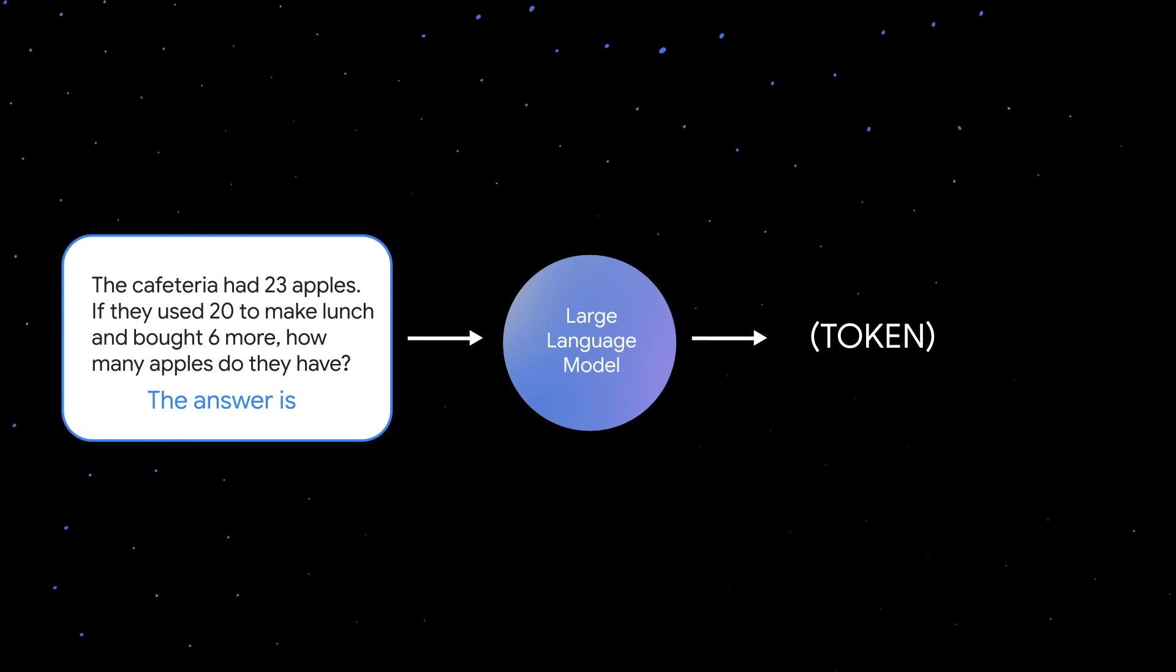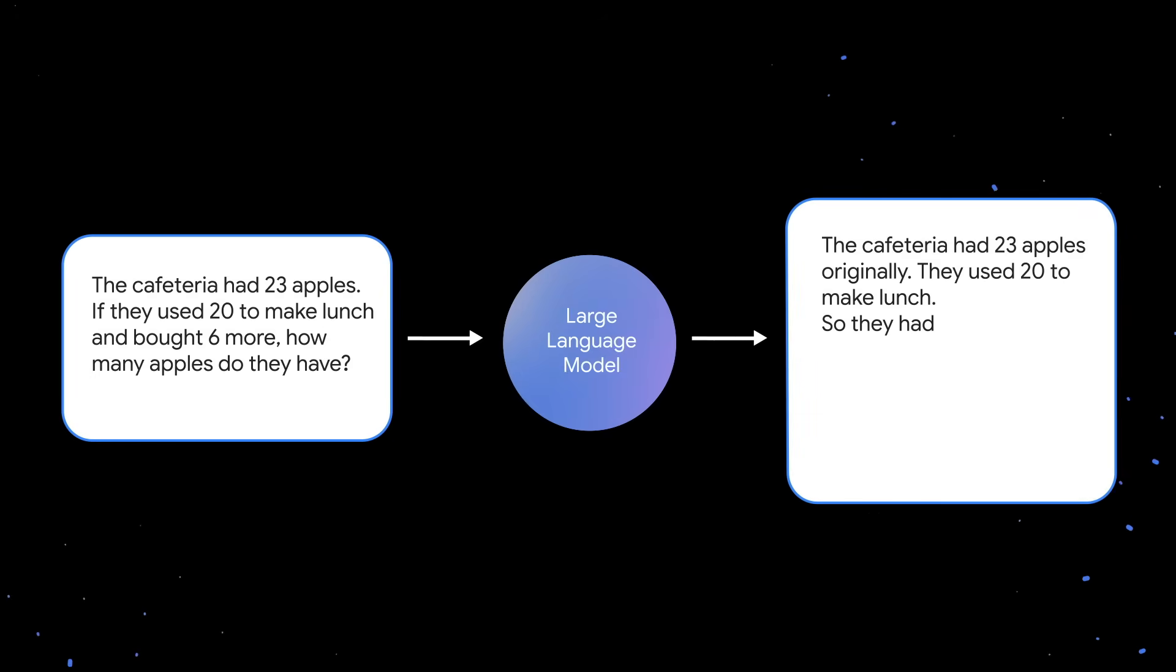Alternatively, when the model is prompted to break the problem down into smaller steps, it's generating more tokens, which means more forward passes through the model's weights. By allowing models to reason, they spend more compute before generating an answer. Test time compute is like cranking the dial on this concept of chain of thought prompting.